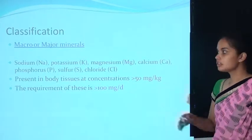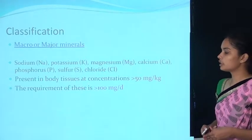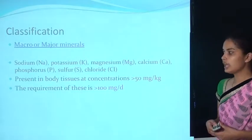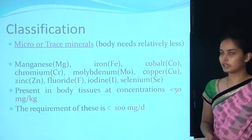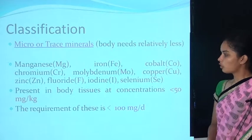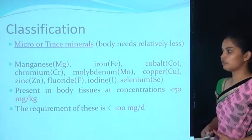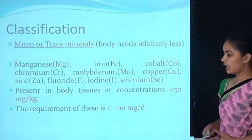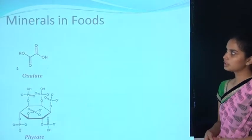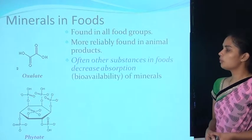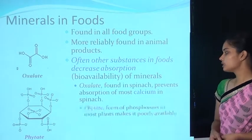Minerals are classified into two categories: macro (major) minerals and micro minerals. Macro minerals include sodium, potassium, magnesium, calcium, phosphorus, sulfur, and chlorine. They are present in body tissue at concentrations greater than 50 mg/kg, with a daily requirement greater than 100 mg. Micro minerals include manganese, iron, cobalt, chromium, molybdenum, copper, zinc, fluoride, iodine, and selenium. They are present at concentrations less than 50 mg/kg, with requirements less than 100 mg per day. Minerals are found in all food groups, more reliably in animal products.